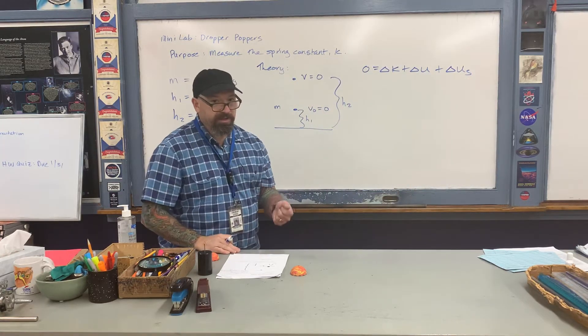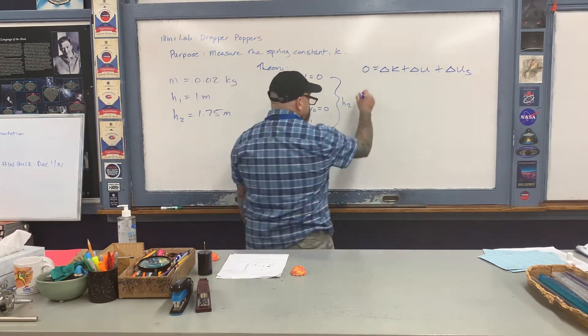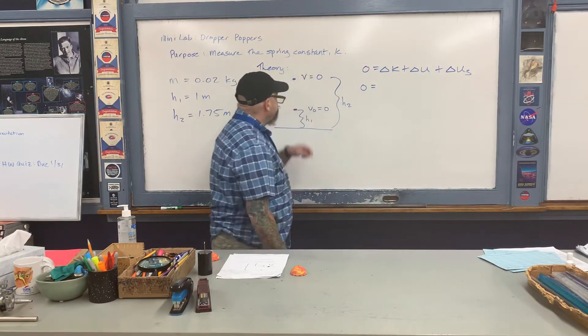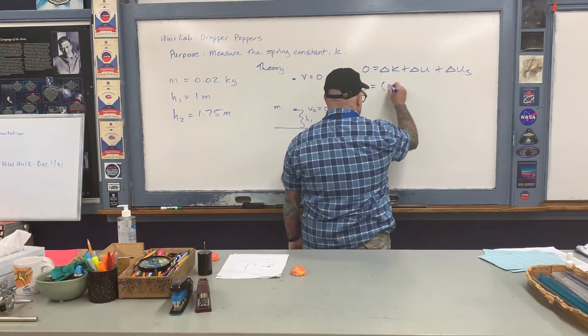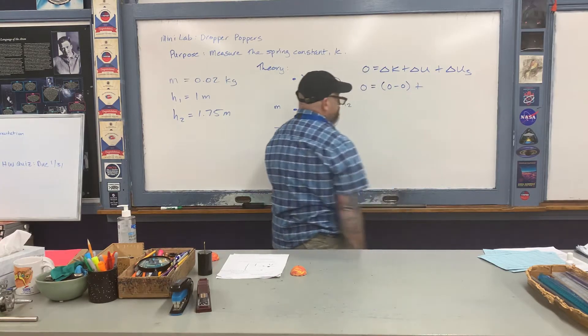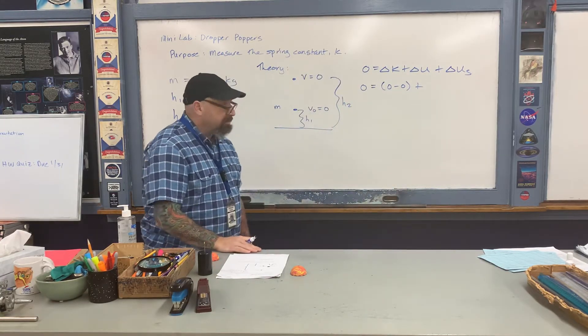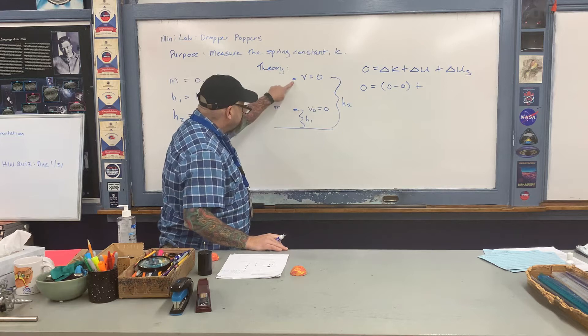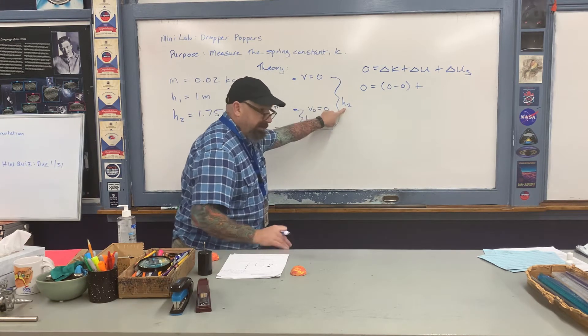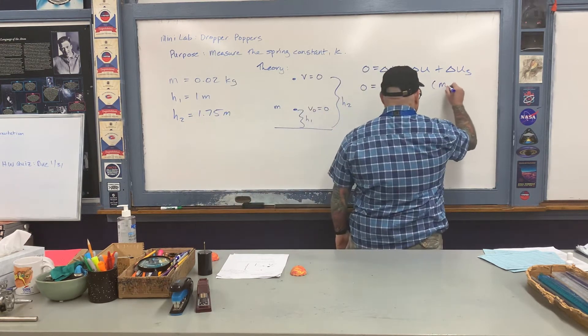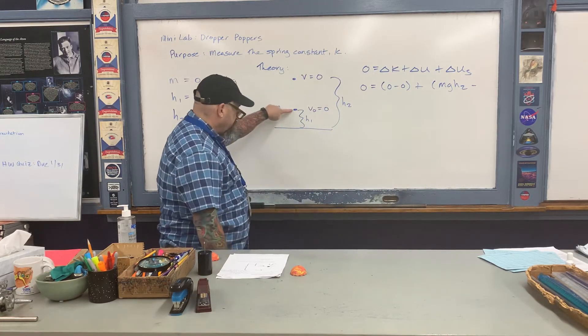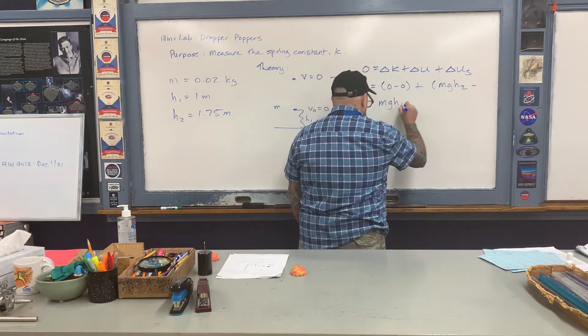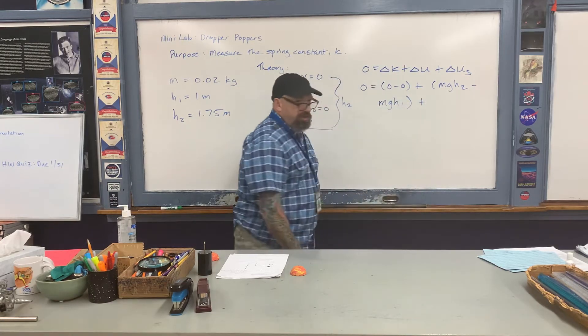Now I'm going to start filling in my terms. First, the change in kinetic energy: both the final and initial kinetic energies are zero, so zero minus zero for the first term. Then change in gravitational potential energy: my final gravitational potential energy is up here with the height h2, minus the initial gravitational potential energy here at the height h1.